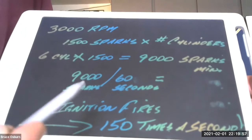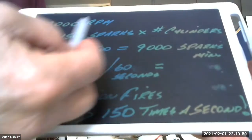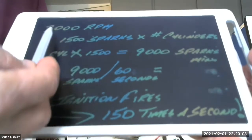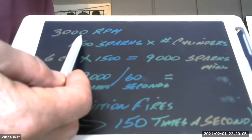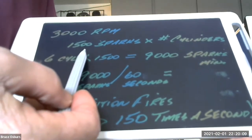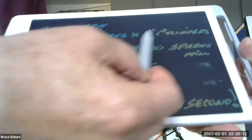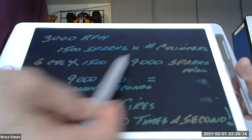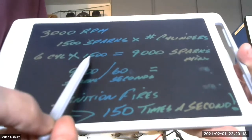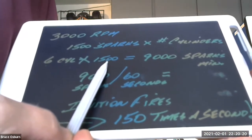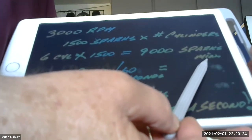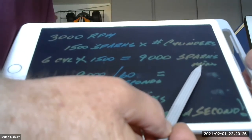So when we break that down to the spark, let's take that 3,000 RPM on a six-cylinder engine. If it's turning at 3,000 RPM, it has to provide a spark 1,500 times per minute times the number of cylinders. So if you take a six-cylinder engine times 1,500 sparks per minute, then you have 9,000 sparks per minute that the coil is asked to produce.